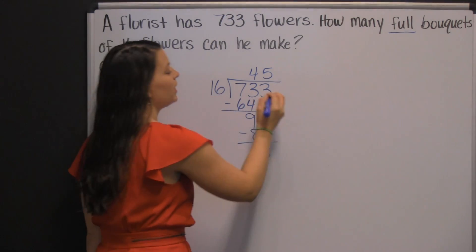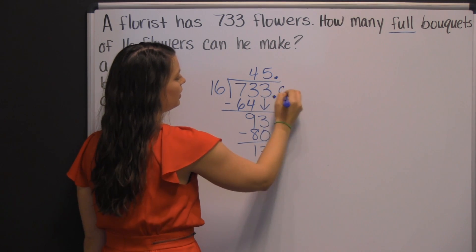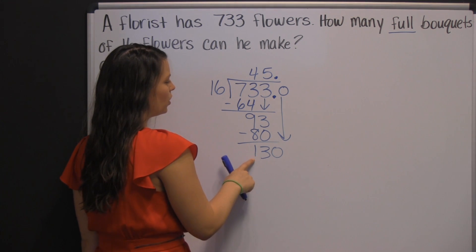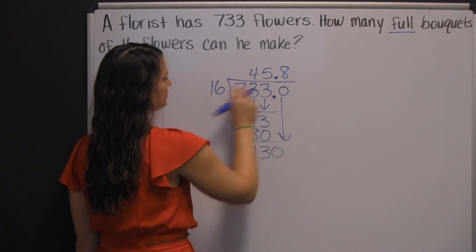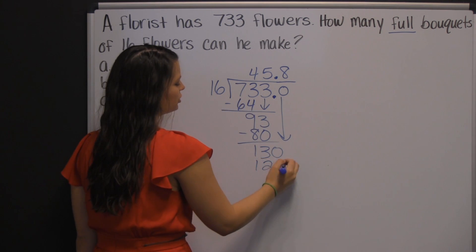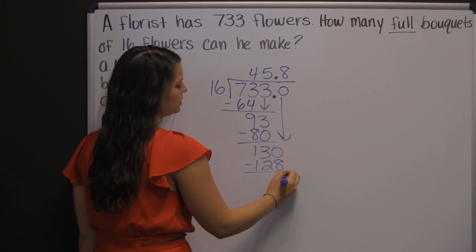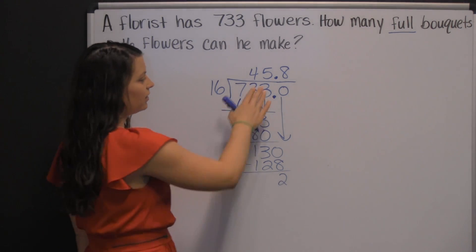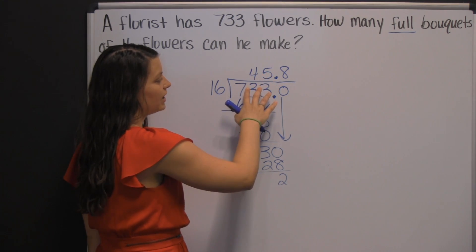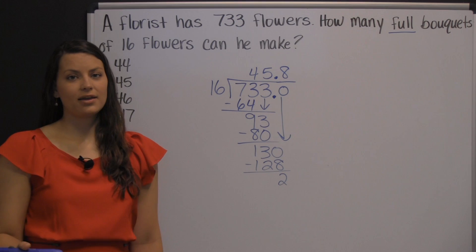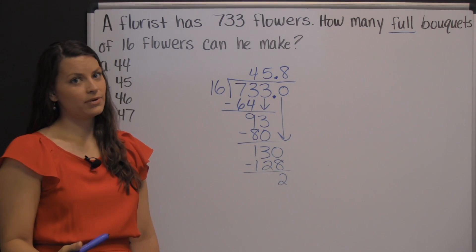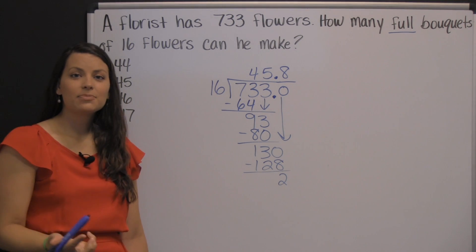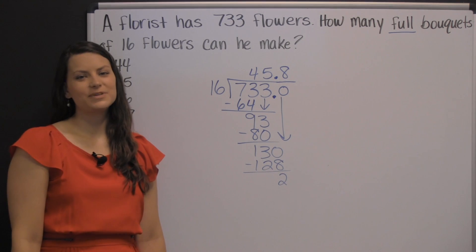If you wanted to continue, you would add a decimal, bring it up, add a zero, and bring it down. 16 goes into 130 eight times — that's 128. Subtract and you get 2. You can see that you can make 45 full bouquets and eight-tenths of another bouquet, but that eight-tenths is not a full bouquet. So the answer is 45. There you have one example of an arithmetic problem you could see when taking the ASVAB.